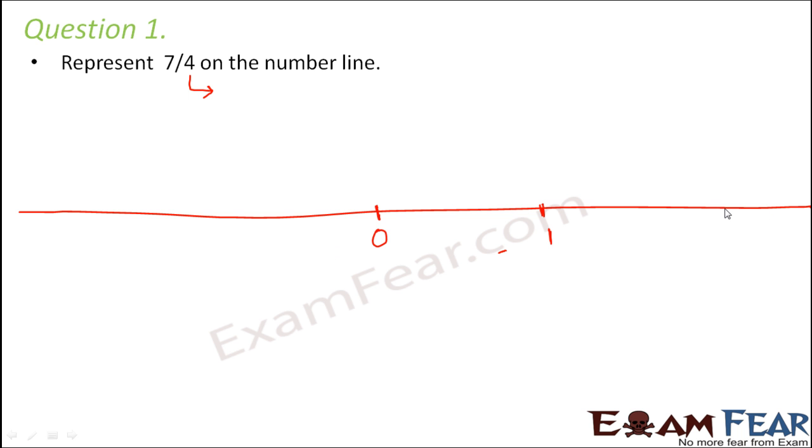Let's say if this is 0, 1, 2 and so on, and this side you have -1, -2 and so on. So what we do is we divide this section between 0 to 1 into 4 equal parts because 4 is the denominator. So let's say 1, 2, 3, and 4. So similarly we divide every segment into 4 equal parts like this.